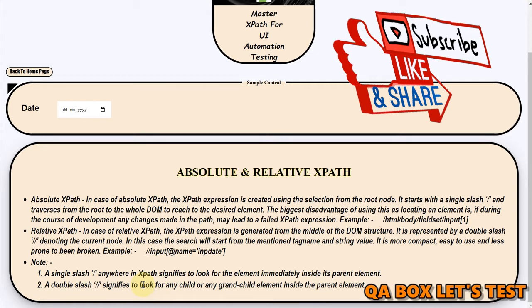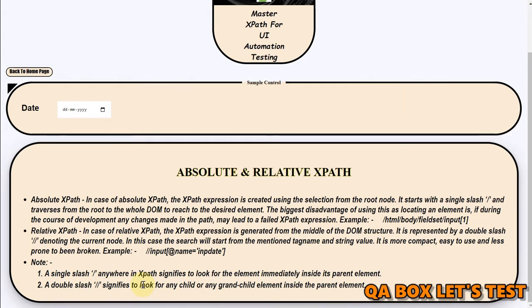A double slash in the XPath anywhere signifies to look for any child or any grandchild element inside the parent element or the context node.